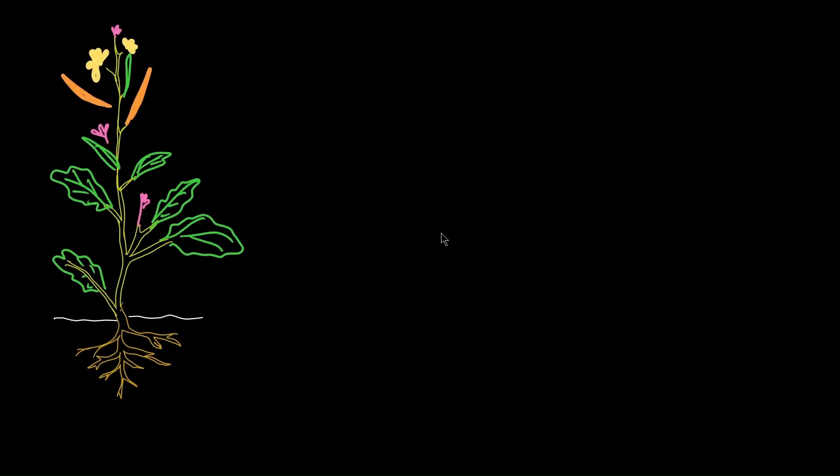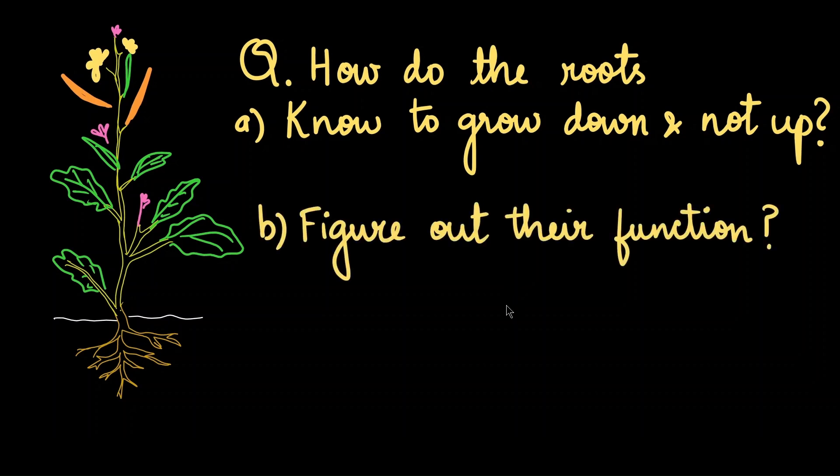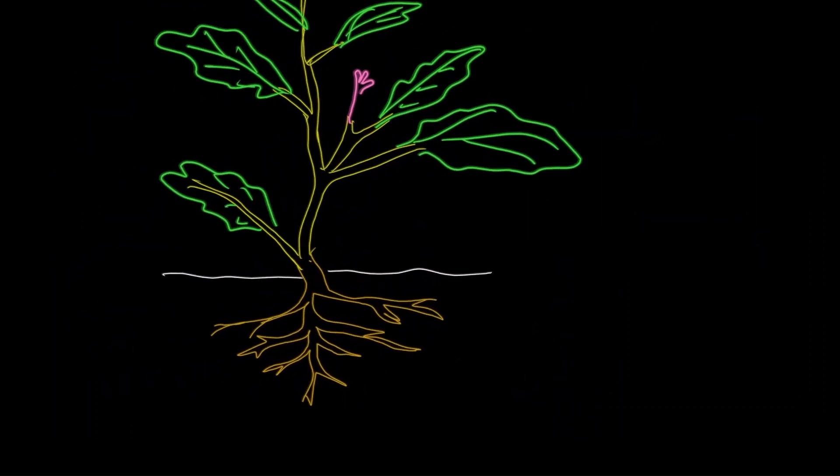In a previous video, we talked about the different types of root systems: tap roots, fibrous roots, and adventitious roots. But have you ever wondered how roots actually grow? How do they always know to grow downwards into the soil instead of in the opposite direction? And once they grow, how do their cells figure out what they need to do? To answer these questions, we need to take a closer look at the structure of a root.